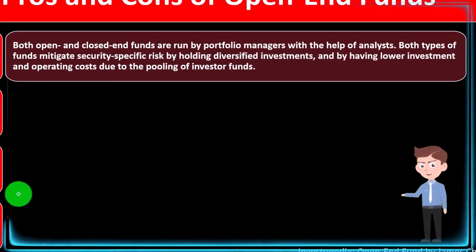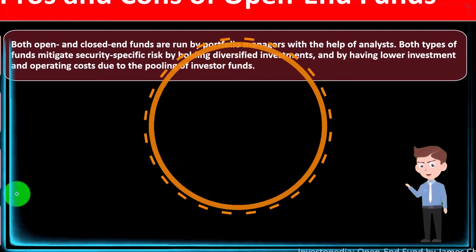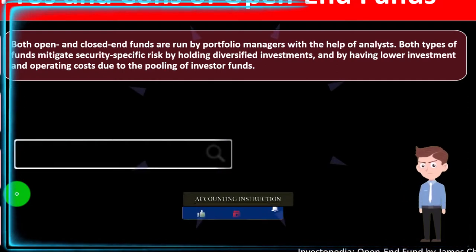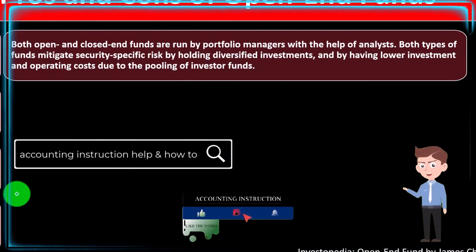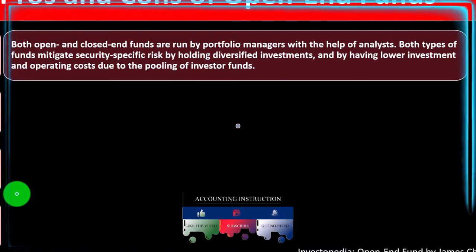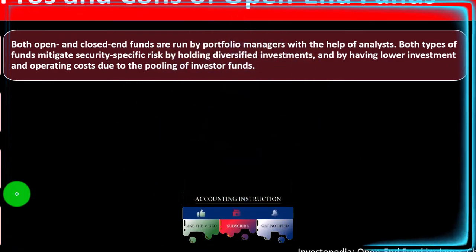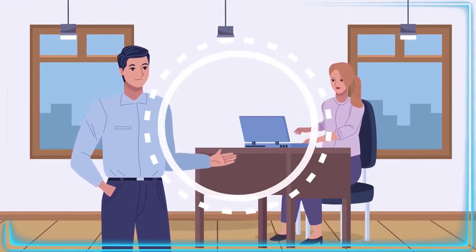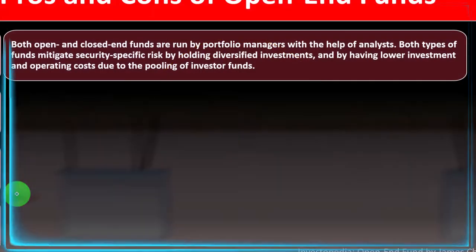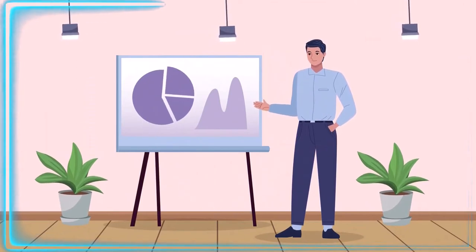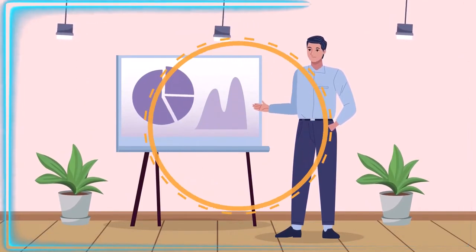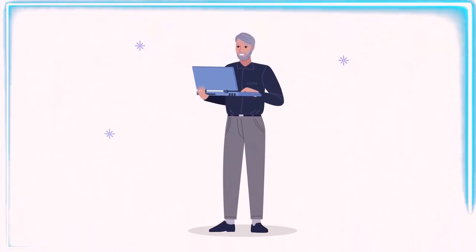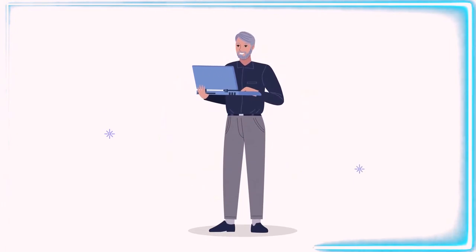Both open and closed-end funds are run by portfolio managers with the help of analysts. Both types of funds mitigate security-specific risk by holding diversified investments and by having lower investment and operating costs due to the pooling of investor funds. The degree of management — in terms of what they'll actually invest in — can vary. For example, you might purchase index-type funds, which limit management to investing in accordance with an index.